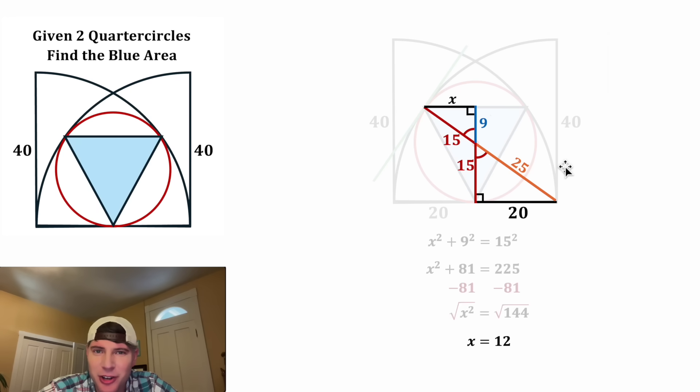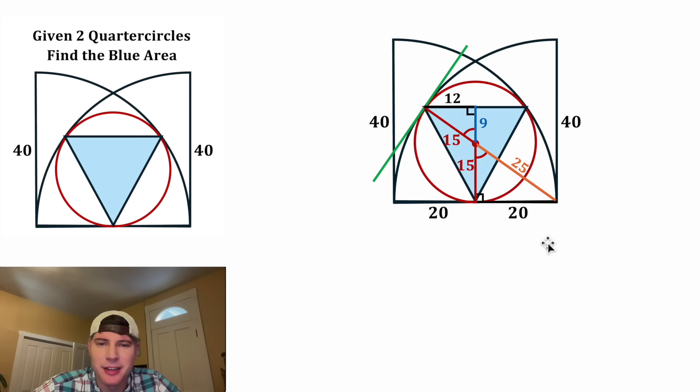If you didn't recognize the shortcut, you can also do the Pythagorean theorem. It would be X squared plus 9 squared is equal to 15 squared. And that'll end up simplifying into X equals 12. So we can change this X up here into 12.